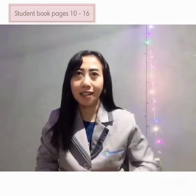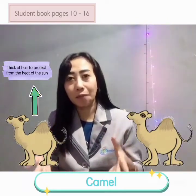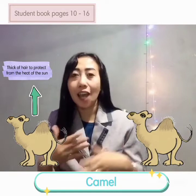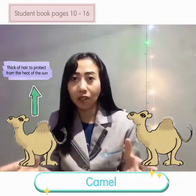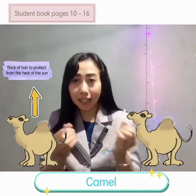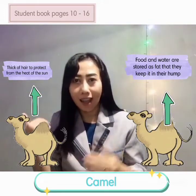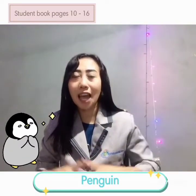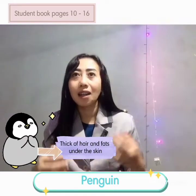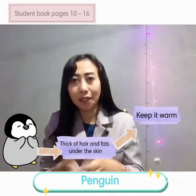Animal survival. Number one is camels. Camels have a thick coat of hair that protect them from the heat of the sun. They have wide, soft feet so they can walk on the sand for a long time. They can eat and drink a large amount of water and food and store it in their body. Number two, penguins. Penguins have thick skin and lots of fat under their skin that can keep them warm.